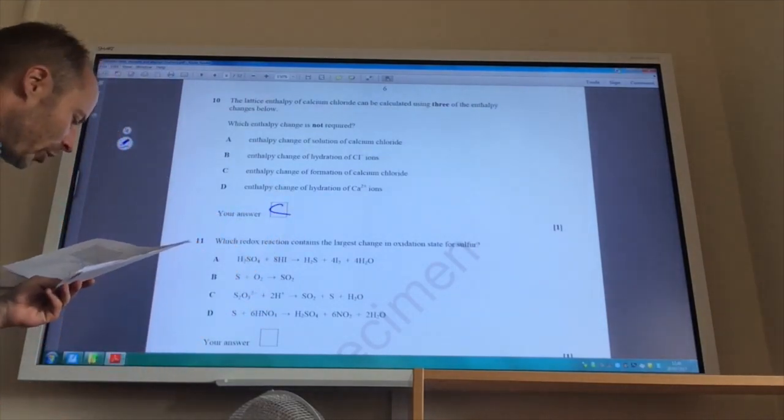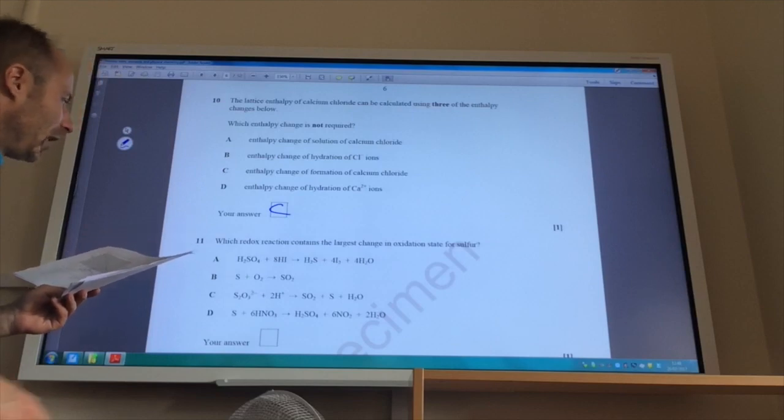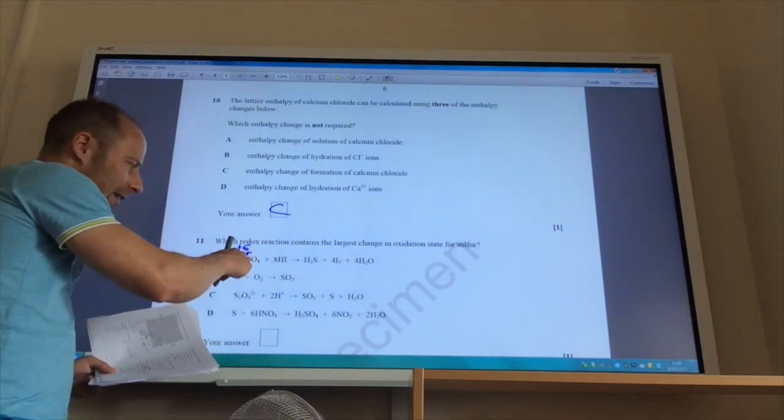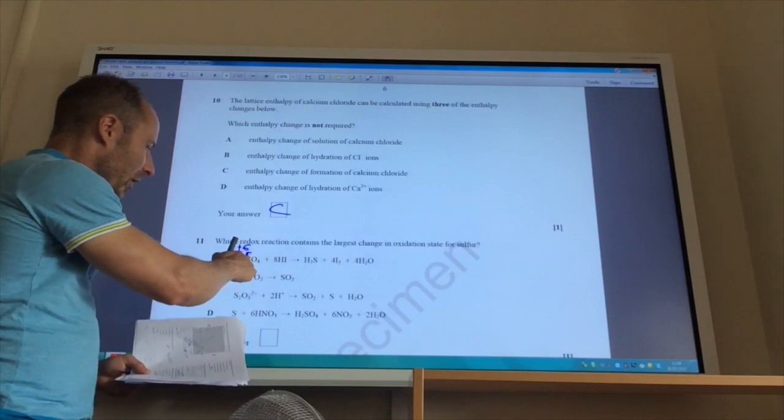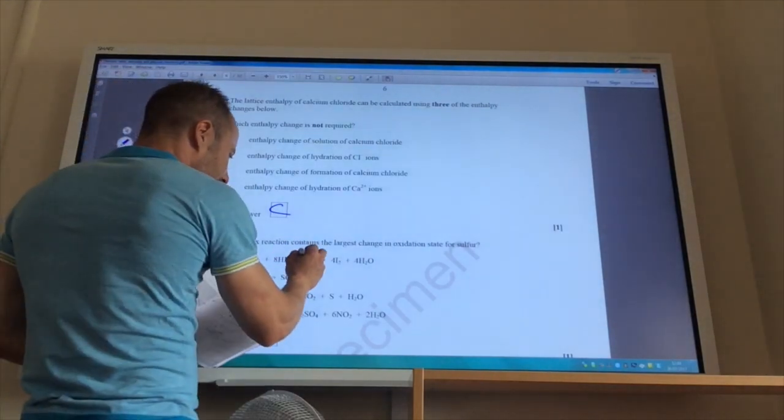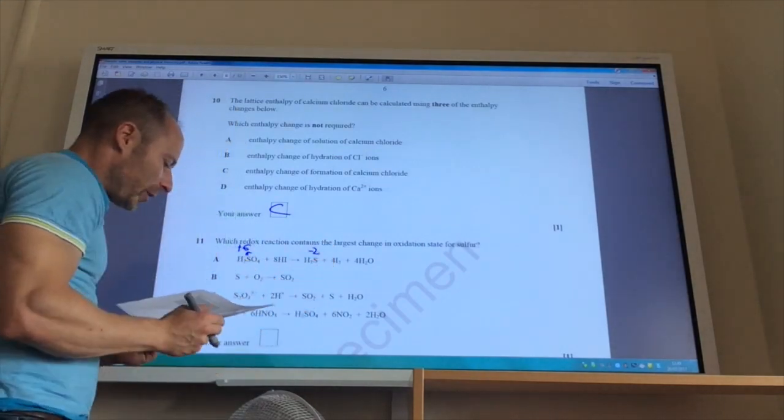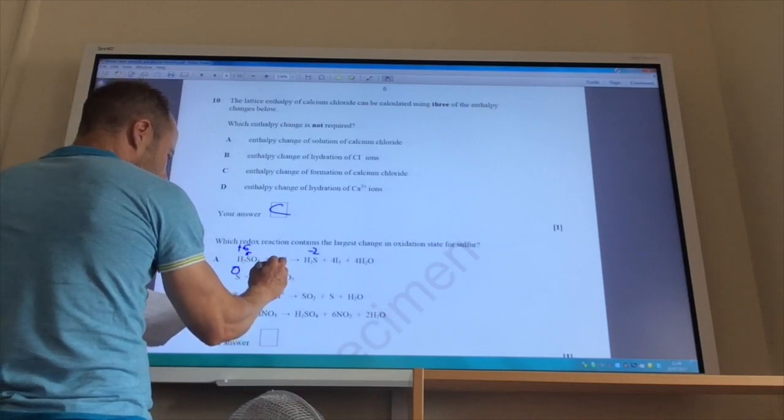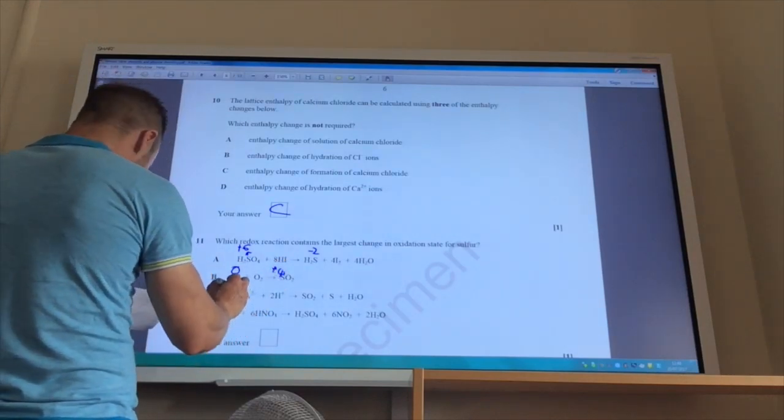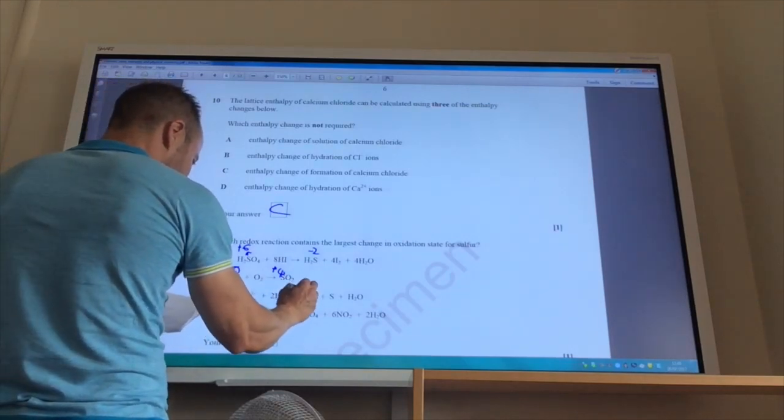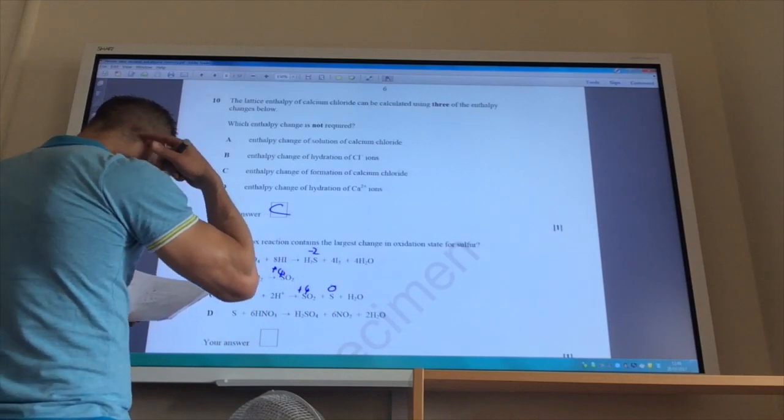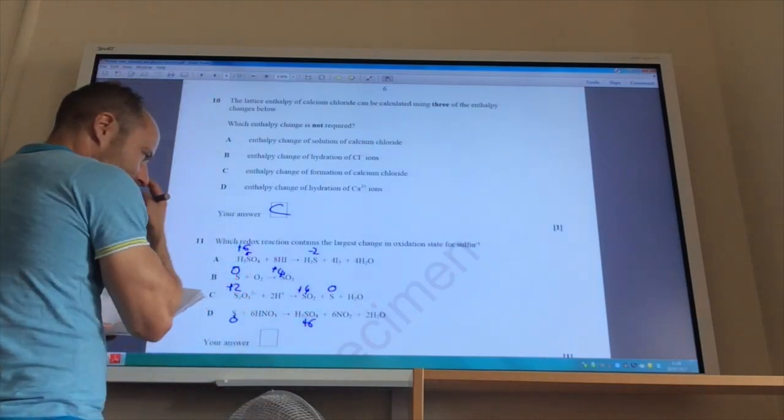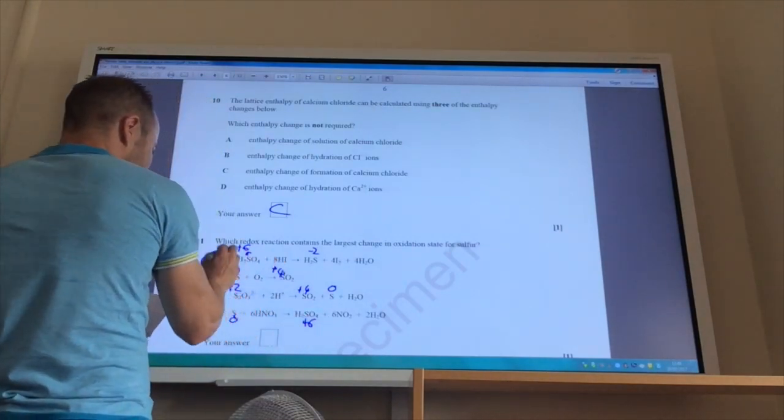Which redox contains the largest change in oxidation state for sulfur? Sulfur here is going to be plus 6. This is the sulfate ion. So remember, oxygen is minus 2, hydrogen is plus 1. Here, because hydrogen is plus 1, sulfur is minus 2. So that's quite a big change. Here, if I just run through it, that's 0, that is plus 4 there. For the next one, this sulfur is plus 2 and this sulfur is again plus 4 and that's 0. And then for this one, 0 obviously for elemental sulfur and plus 6 for that one. So the one that has the biggest change is A.